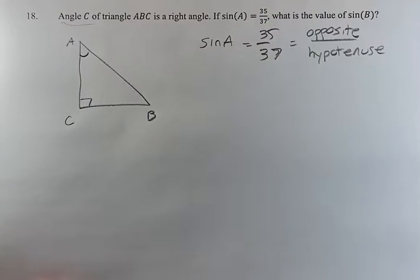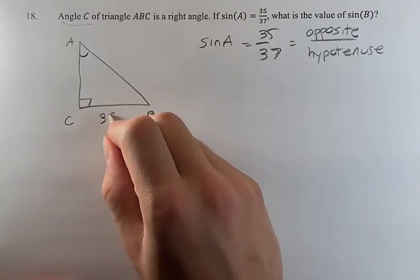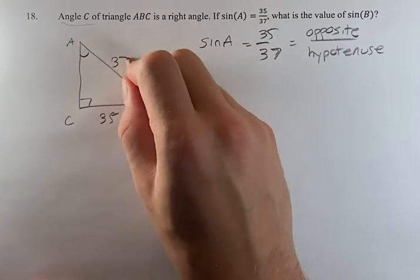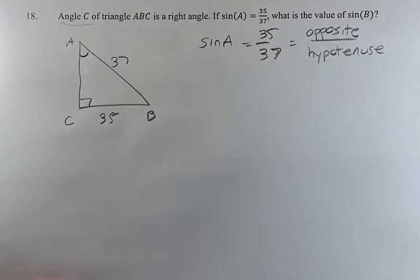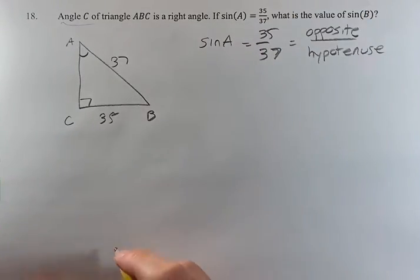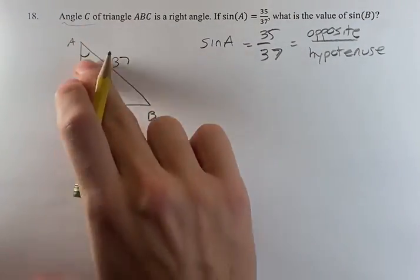It's going to be easiest for the problem if we just put in 35 and 37. We could put in 70 and 74, which would be twice as big, or 350 and 370, but it doesn't actually matter because we're not trying to find the lengths of the sides. We're just trying to find the sine of the angles. If both of these get twice as long, the angle still stays the same.